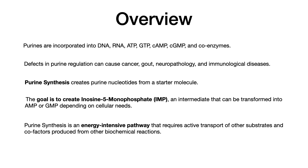Because purines are very important, the body needs a way to create them. Defects in purine regulation can cause different pathologies like cancer, gout, neuropathology, and immunological diseases. Purine synthesis creates purine nucleotides from a starter molecule — the body grabs various substances and straps on more pieces of chemical information to create purine nucleotides.